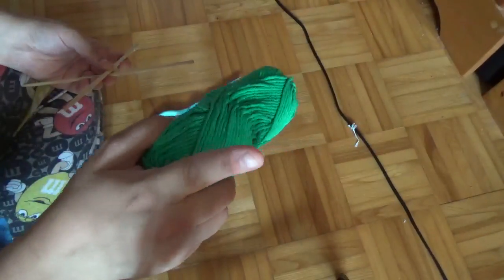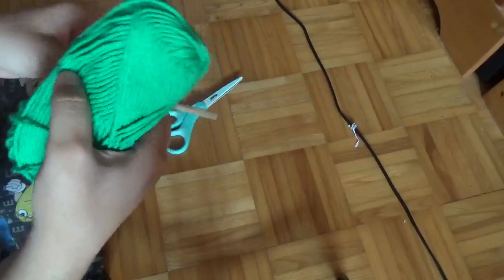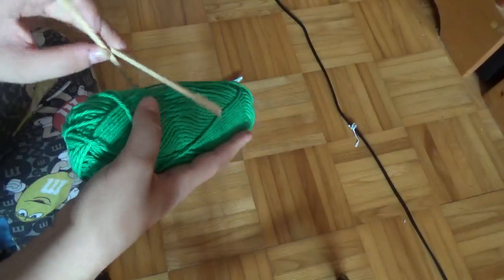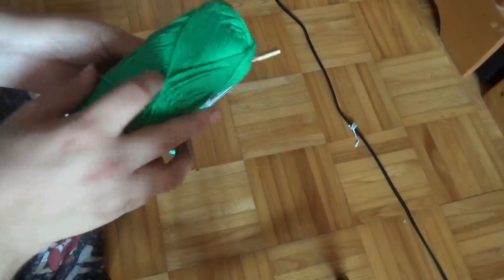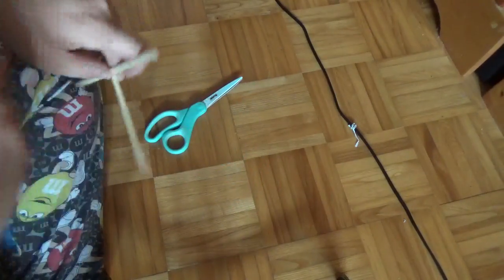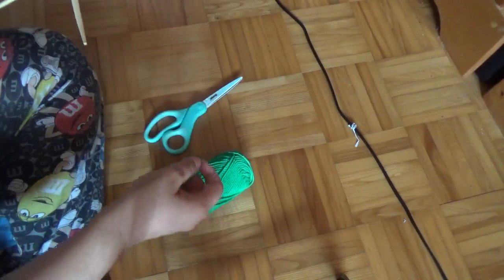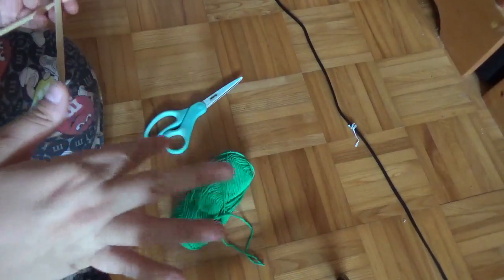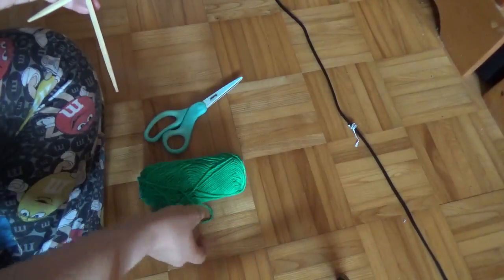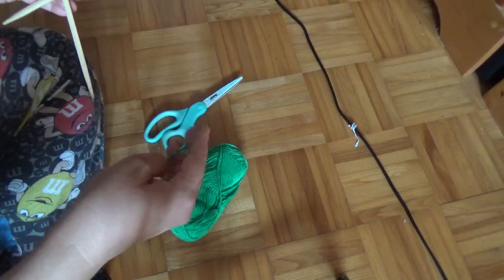And you can also make god's eyes with multiple colors just by tying the new color onto the old and cutting and then continuing on. I can show closer to the end of this how to do that.